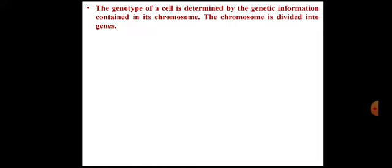The genotype of a cell is determined by the genetic information contained in its chromosome. The chromosome is divided into genes. In the case of a bacterial cell there is presence of a covalently closed circular single DNA molecule — meaning in bacteria there is presence of a single chromosome — and this chromosome consists of several genes.